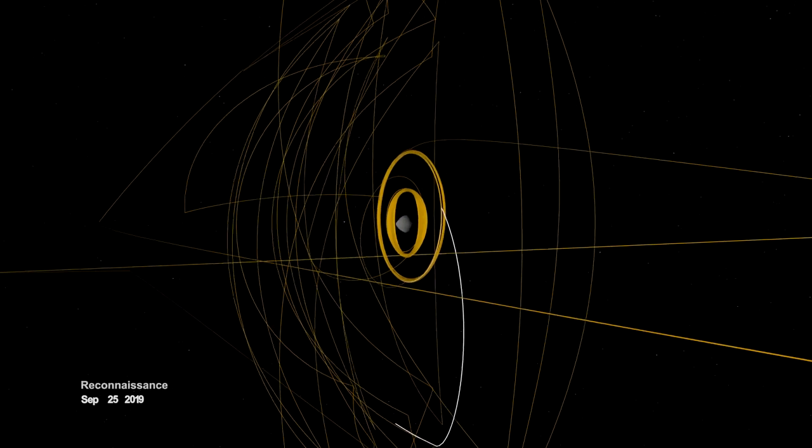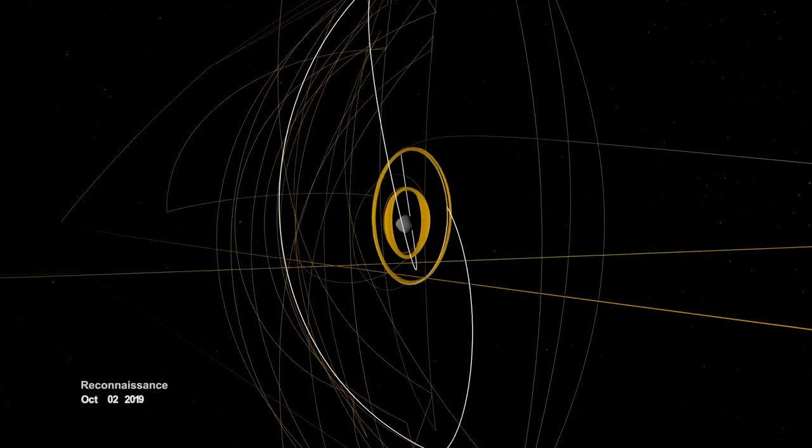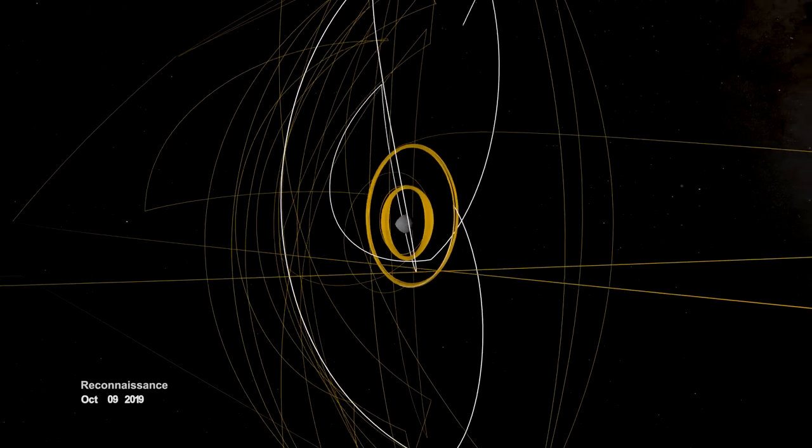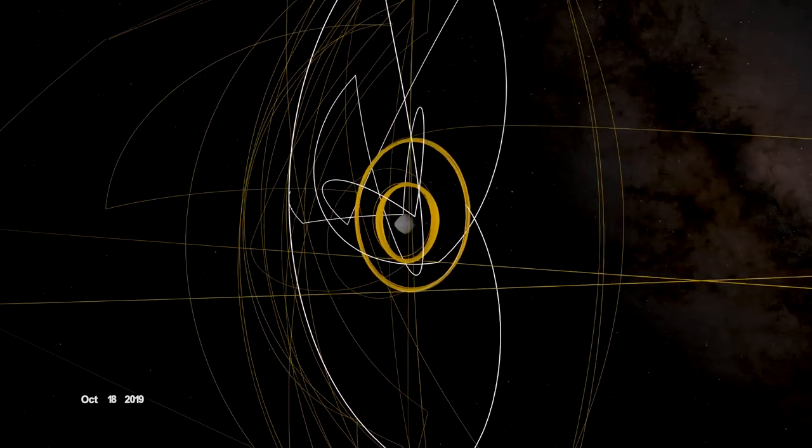In September, it began reconnaissance on four candidate sample collection sites, potential locations on Bennu to touch down and collect a sample later in the mission.